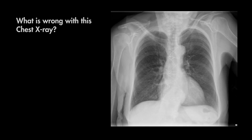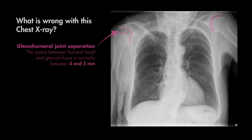Let's try this one — what do you see here? If you make note of the symmetry to the glenohumeral joints, you might notice that the right shoulder is dislocated. It might not be so obvious, but there is a separation of the right glenohumeral joint, which could be suggestive of a dislocation.